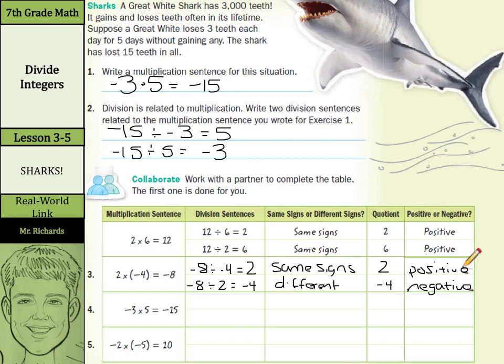What about our next row? Well, we have negative 3 times 5 is negative 15, but our division sentence, we can write negative 15 divided by — let's go to the positive 5 first — equals negative 3. We're just kind of undoing it. So we have here different signs with the 15 and 5. Our quotient was a negative 3, so our quotient was negative.